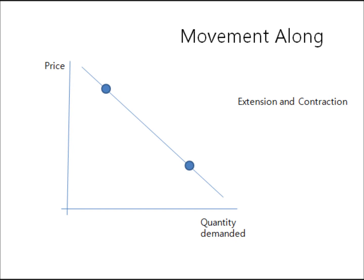Contraction of demand works the same way, but backwards. If you start from point two and end up at point one, then the quantity demanded decreased because it started over here and ended up over here.